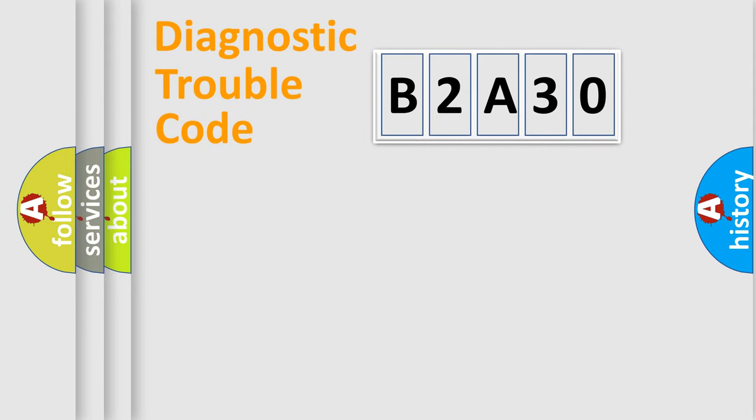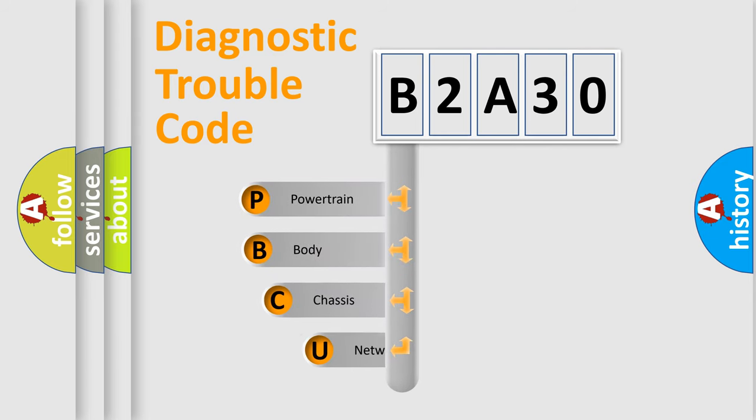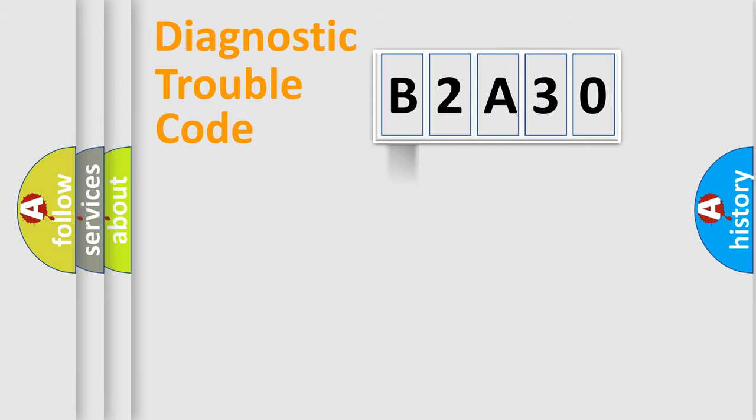First, let's look at the history of diagnostic fault code composition according to the OBD2 protocol, which is unified for all automakers since 2000. We divide the electric system of the automobile into four basic units: Powertrain, body, chassis, and network.